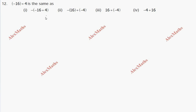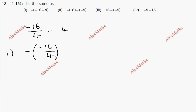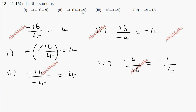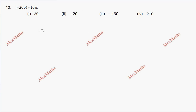Question 12: Minus 16 divided by 4 is the same as which option? The answer is minus 4. First option: minus 16 divided by 4 equals minus 4 — correct. Second option: minus 16 divided by minus 4 gives positive 4 — wrong. Third option: 16 divided by minus 4 also gives minus 4 — matches. Fourth option: minus 4 divided by 16 gives minus one-quarter — wrong. So option 3 is left as the answer.